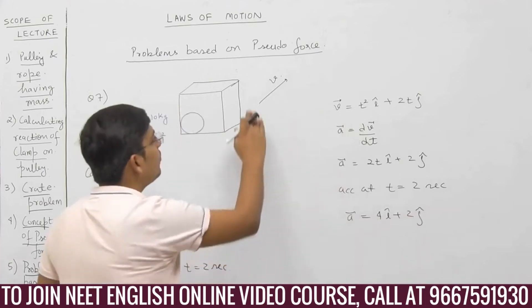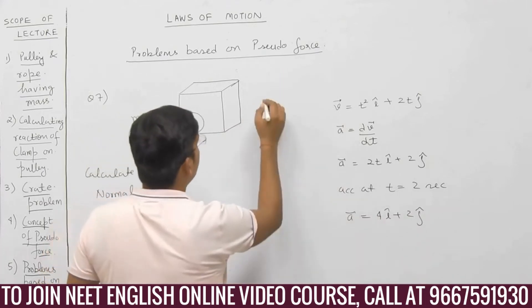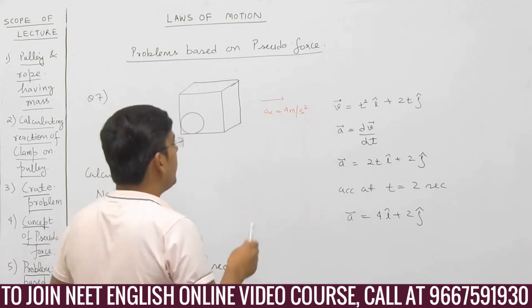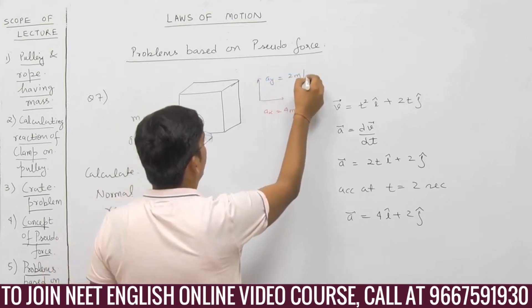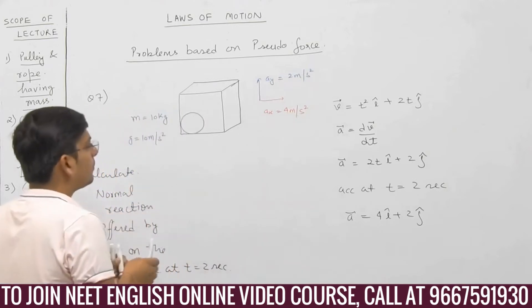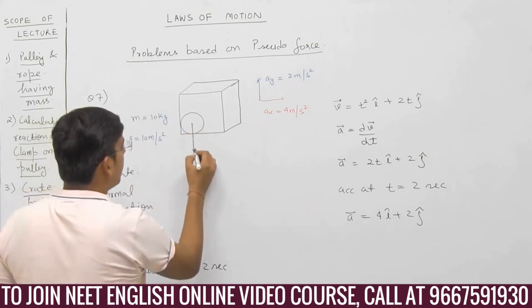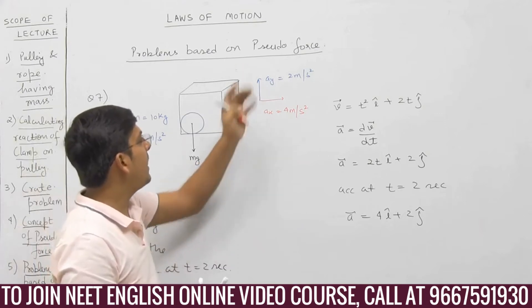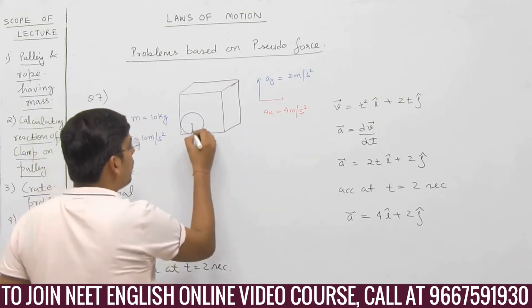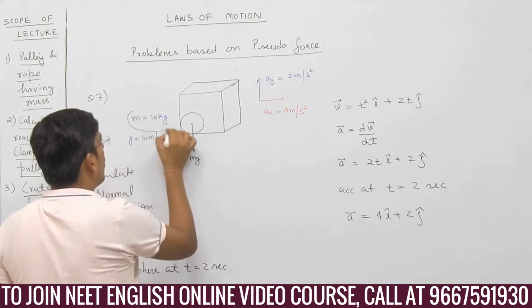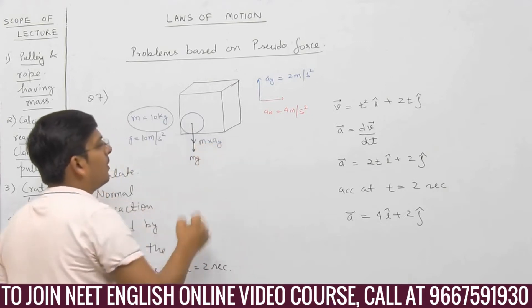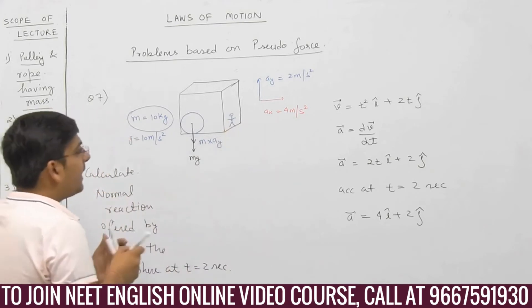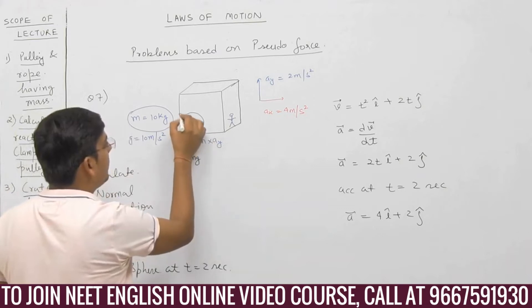That means the cube is moving with acceleration of 4 m/s² along the x-axis, and the cube is moving with acceleration of 2 m/s² along the y-axis. So Mg will act downwards. Acceleration of the cube is in the upper direction, so pseudo force will act in the downward direction — it is equal to mass of the body multiplied by acceleration of the observer. Let us assume that the observer is inside the cube. There will also be a pseudo force along the x direction: this is M·Ax.